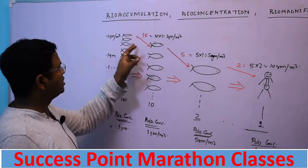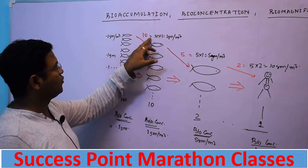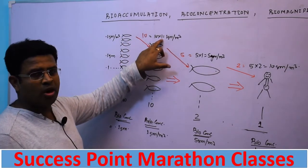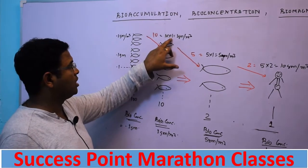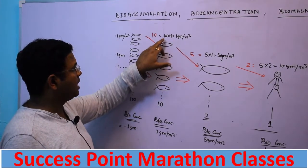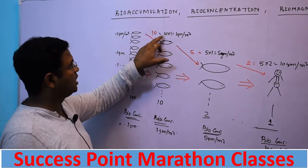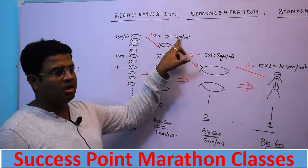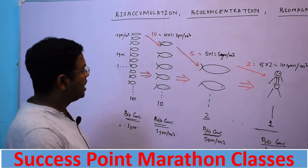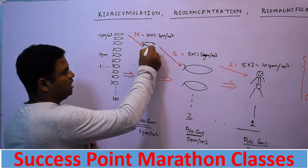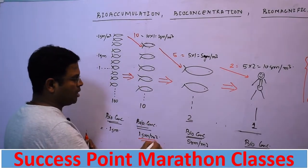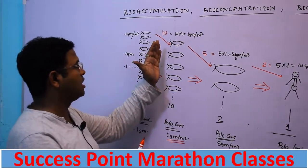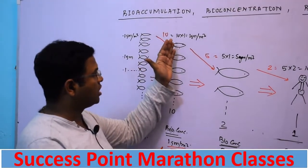Since the bigger fish has eaten ten smaller fish, and each smaller fish had 0.1 gram, ten into 0.1 equals 1 gram per meter cube. So in the bigger fish, the concentration of the non-degradable biochemical substance is now 1 gram per meter cube.